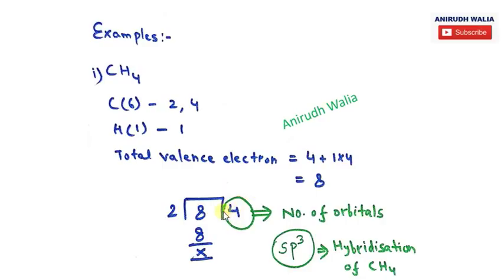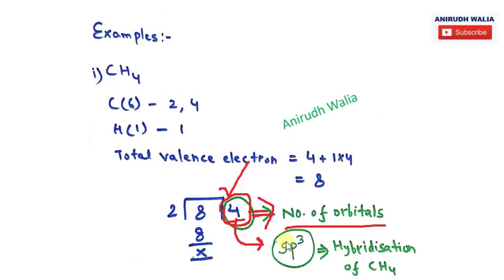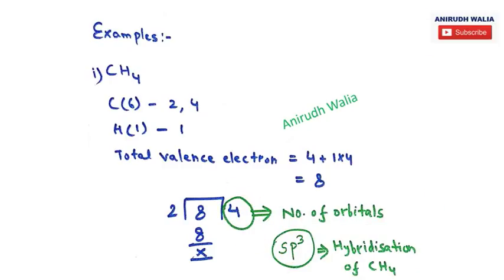The quotient is the number of orbitals. Here we get 4, meaning 4 orbitals total. That's 1 for s and 3 for p, giving us sp3. So sp3 is the hybridization of methane. This is one of the easiest methods to determine hybridization.